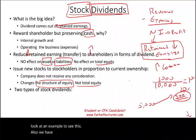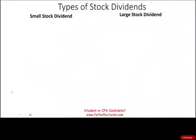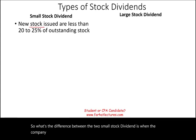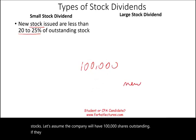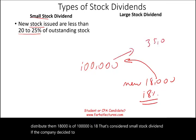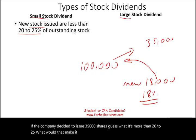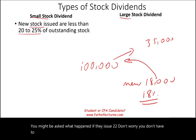We have to differentiate between two types of stock dividends: small stock dividends and large stock dividends. A small stock dividend is when the company issues new stock that is less than 20 to 25% of the outstanding shares. For example, with 100,000 shares outstanding, issuing 18,000 new shares is 18% — that's a small stock dividend. If the company issues 35,000 shares, that's more than 20 to 25%, making it a large stock dividend. You don't need to worry about the 22% borderline case on the CPA exam or in your accounting courses.